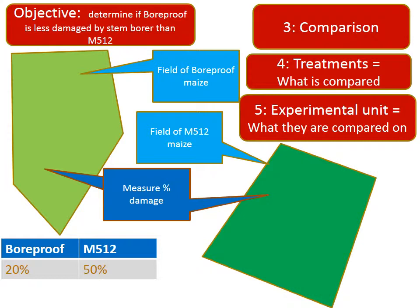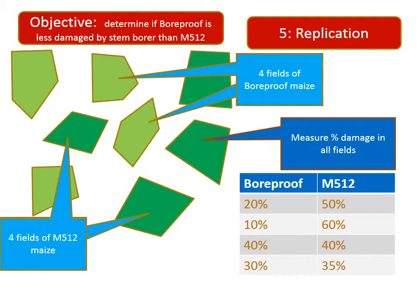I measured percent damage in both fields and found 20% for bore-proof and 50% for M512, so the bore-proof has lower damage. But this is hardly convincing evidence in support of my hypothesis. Maize growers know that the level of damage can vary a lot from field to field, and this difference between 20% and 50% could just be chance, due to the two particular fields selected.